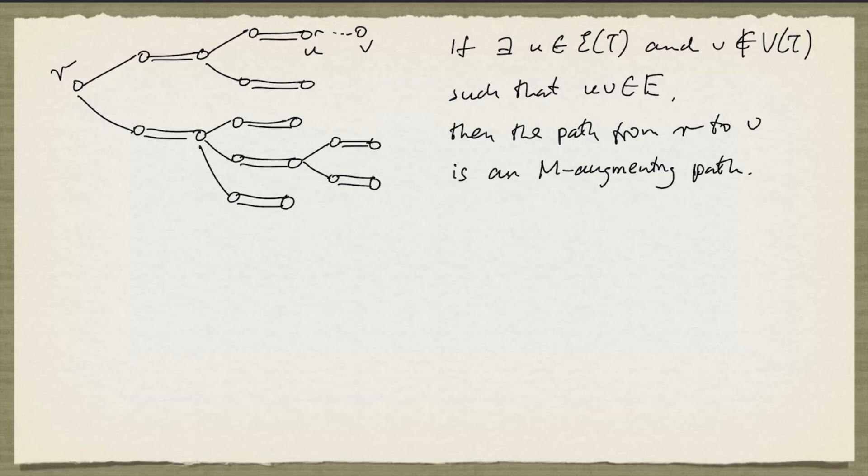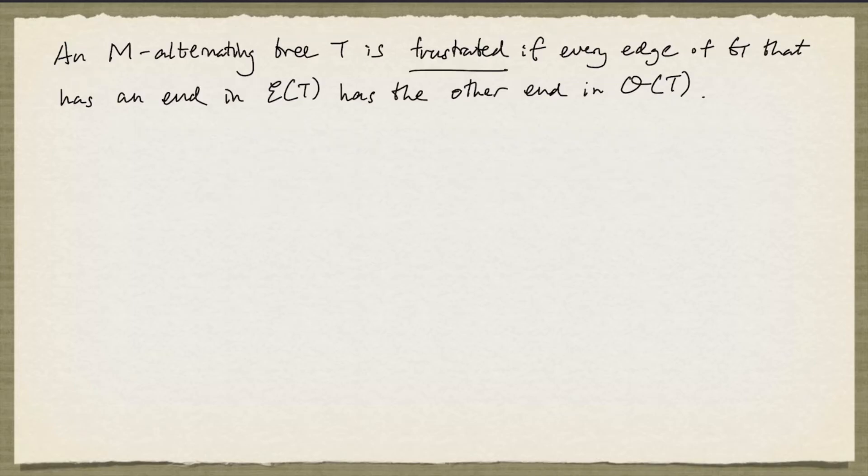Now two things can happen. We can be in the case when every edge that has one end in the even set has the other end in the odd set, and we call the tree frustrated. And the result says that if T is a frustrated M-alternating tree, then there's no perfect matching.